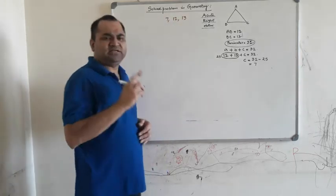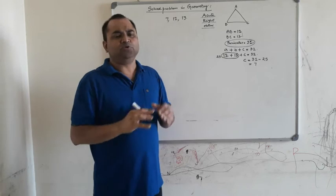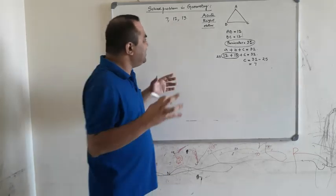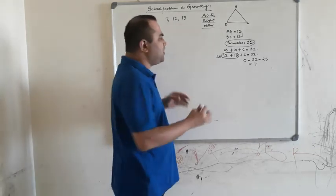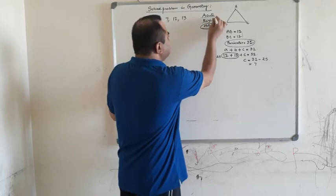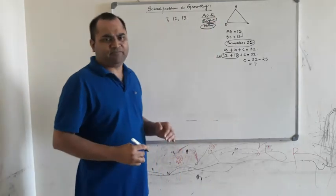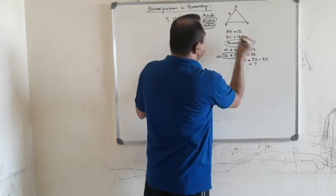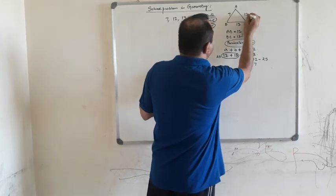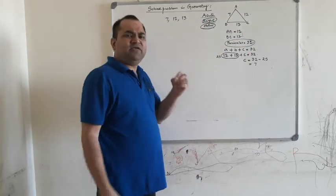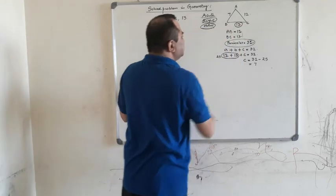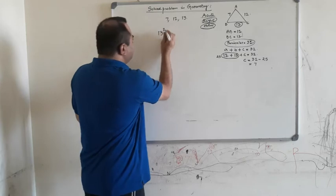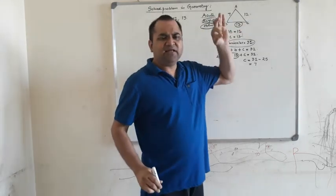So now we have the lengths of the three sides in the triangle: 7, 12, and 13. We are now going to find out which type of angle is in triangle ABC. AB is 7, BC is 13, and AC is 12. What we will do is pick the biggest number, 13, and check its square.